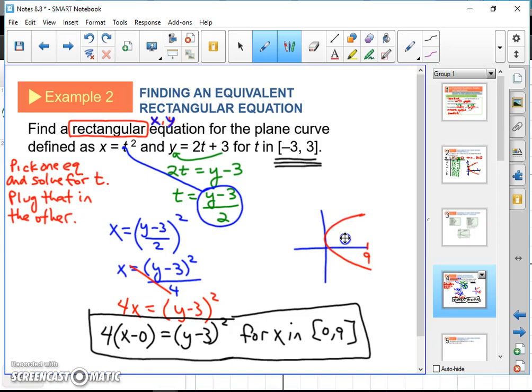Why does it stop at 9? Well, it stopped at 9 because our interval, our original interval from negative 3 to 3, made that happen.